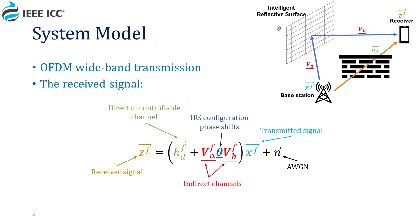Where Z is the received signal, HD is the directed uncontrollable channel from the base station to the receiver, VA and VB are the channels from the base station to the IRS and from the IRS to the receiver respectively, Theta is the change made to the signal in the IRS itself, X is the transmitted signal, and N is an additive white Gaussian noise.